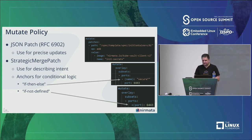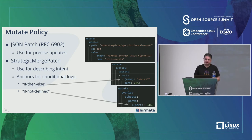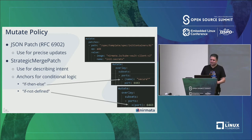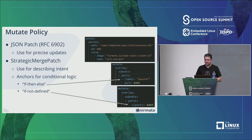Here's a mutate policy example that changes an object. It looks for a specific port name and replaces it with a port number. The parentheses show conditional logic — an if statement saying 'if the name is secure, set the port to something.' A plus sign prefix means 'set this default only if not already specified, otherwise leave it alone.' You can make this as complex as needed, including matching with operators and combined logic.